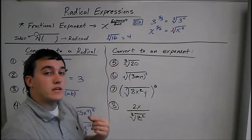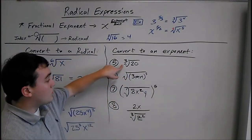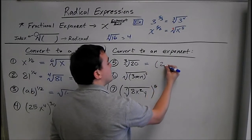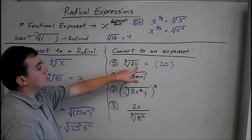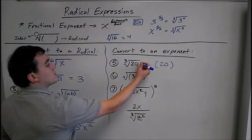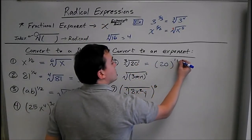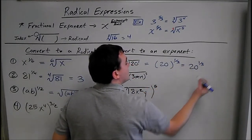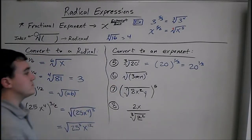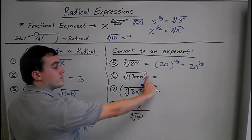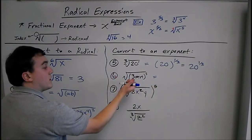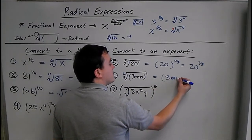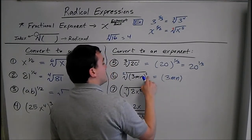Now going backwards — say we want to convert a radical to an exponent. Here we'd have the cube root of 20. Our exponent is on top over the root: exponent is 1 over root is 3. So we could just say 20 to the 1 third power. Same thing for the next one: the exponent is 3 and the root, if there's nothing there, we know is 2. So this would be 3mn to the 3 over 2.